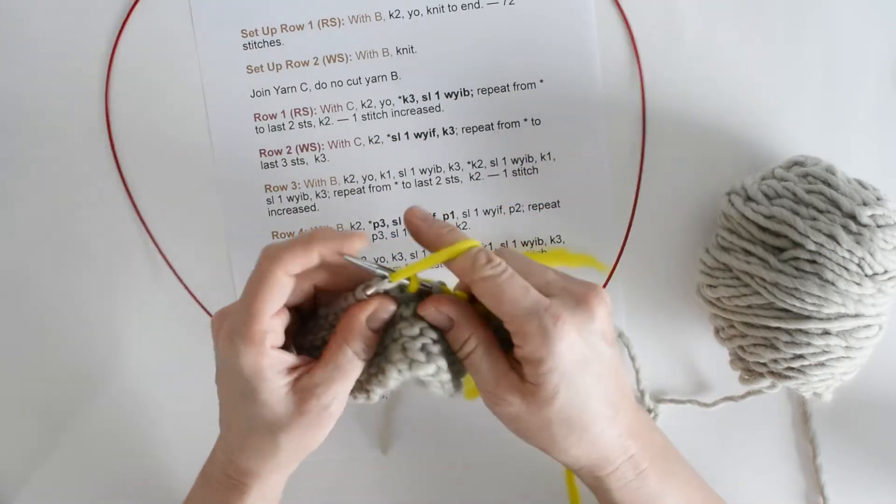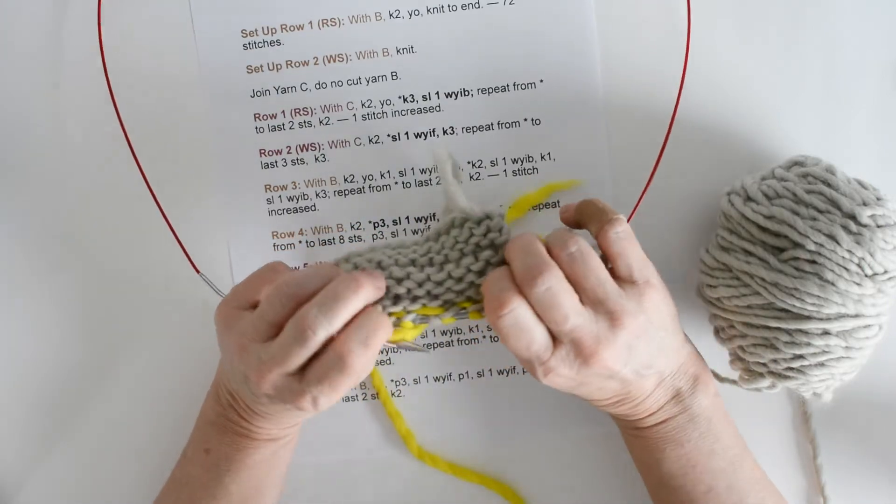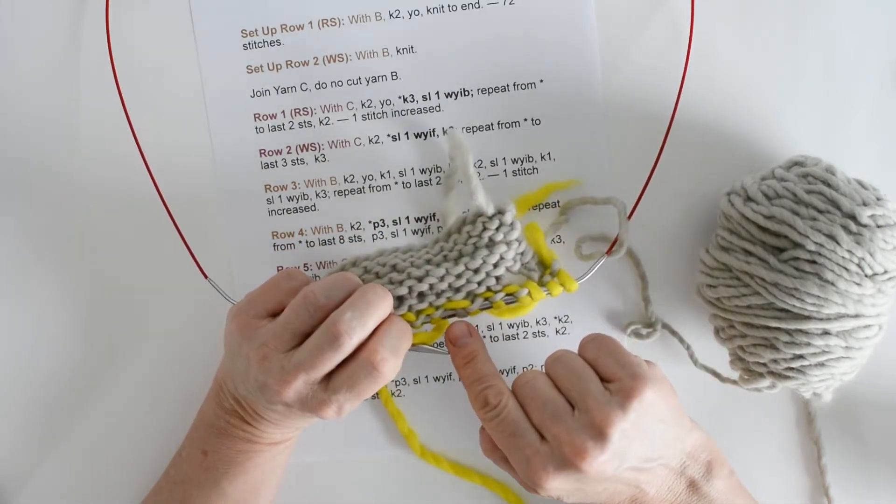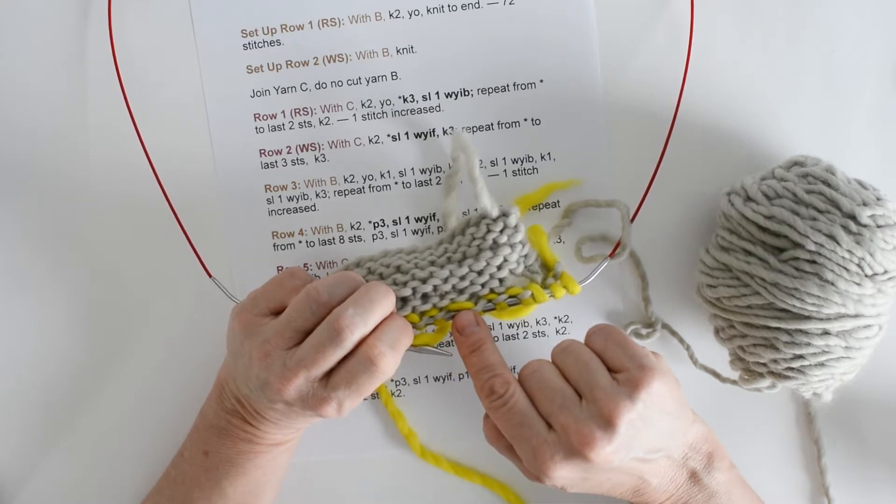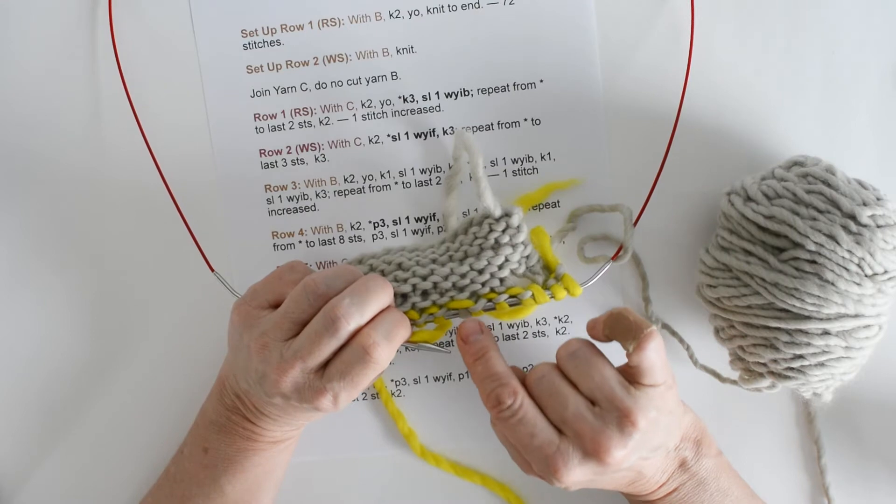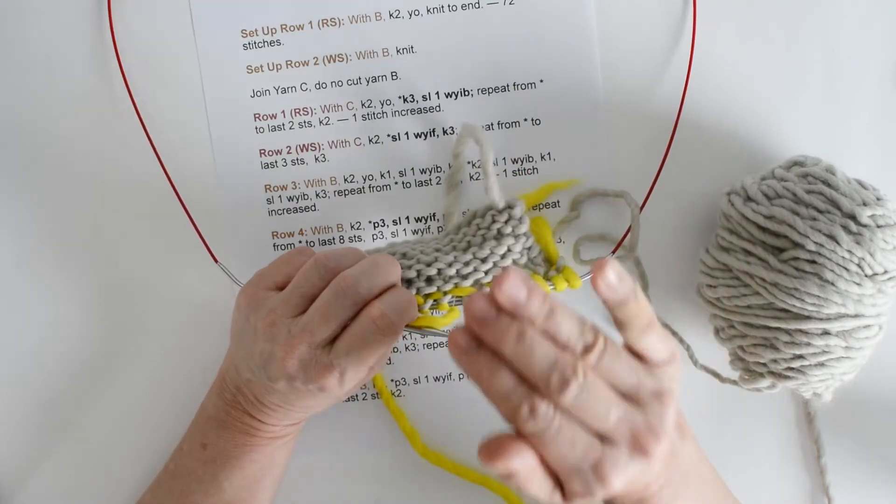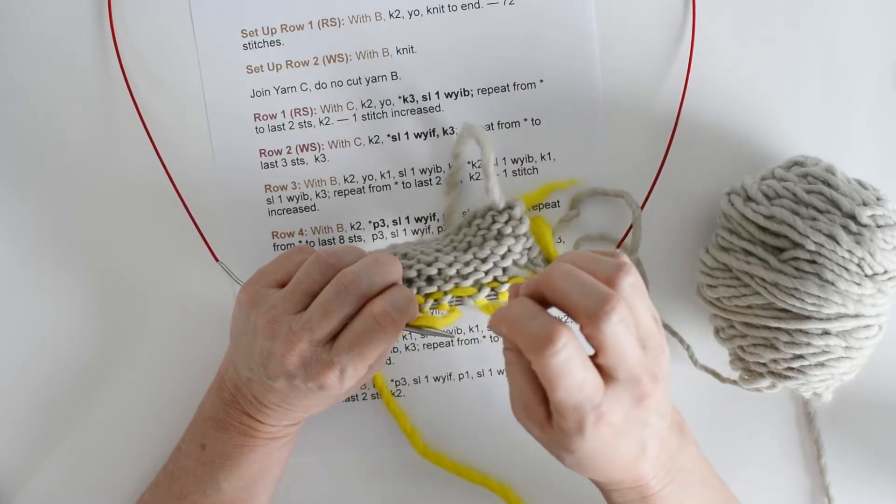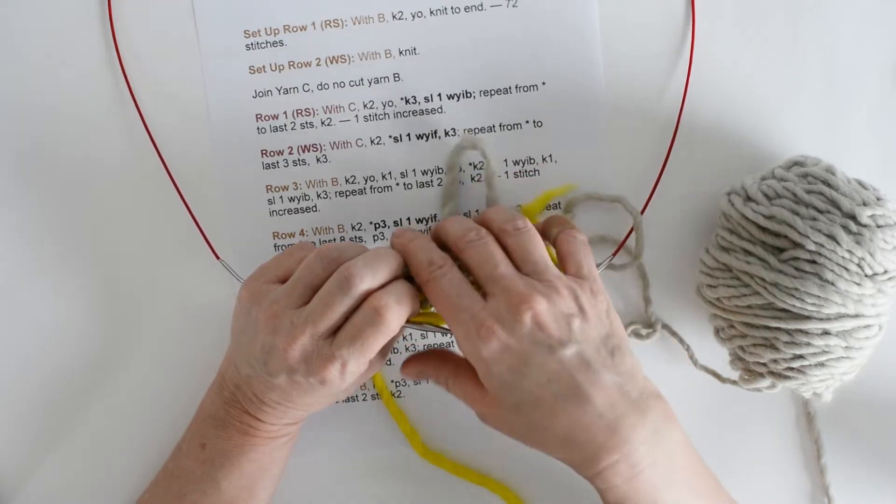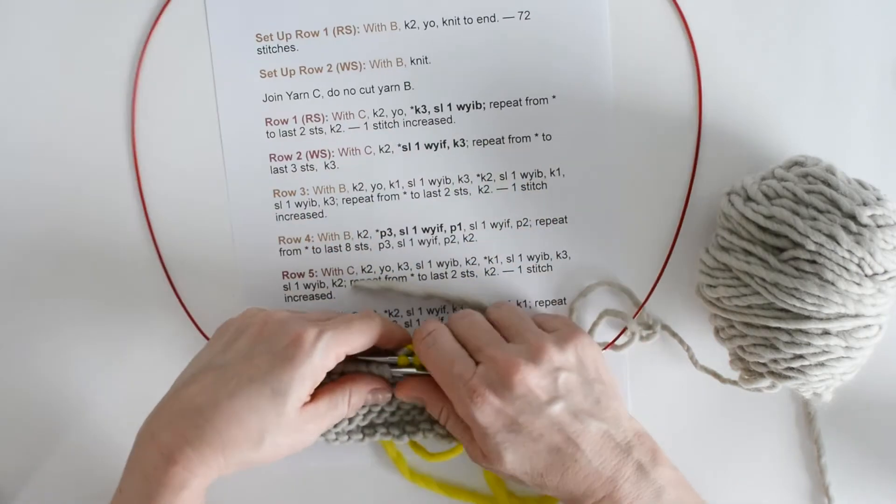1, 2, and 3. Now, keep in mind, we want to keep this slip pretty loose. This thing that goes behind it, this bit of yellow, is called the float. We want to keep that float loose, otherwise we'll get puckering or the gauge of our mosaic will be quite a bit different than the gauge of our garter stitch.